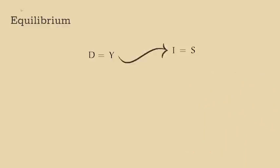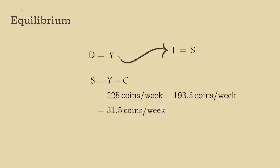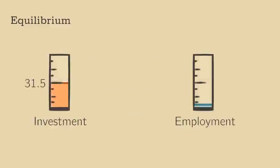And we can find savings in an economy by subtracting consumption from output. 225 coins minus 193.5 coins equals 31.5 coins. So if investment is greater than 31.5, employment will expand in the next week, and if it is less than 31.5, employment will decrease.